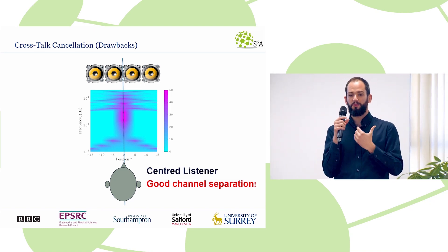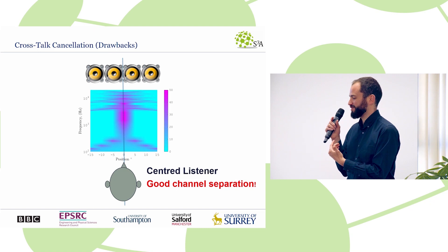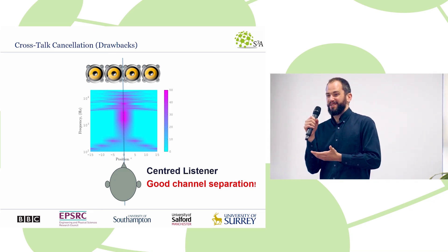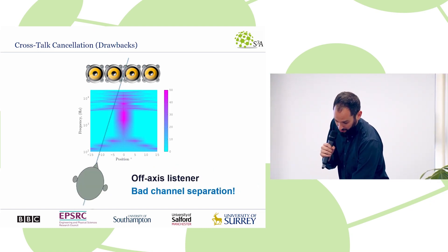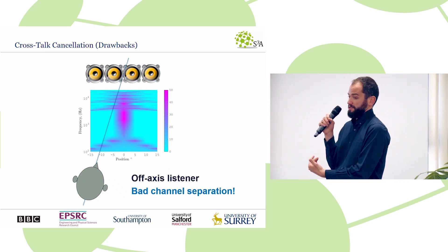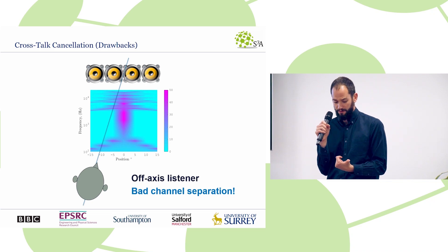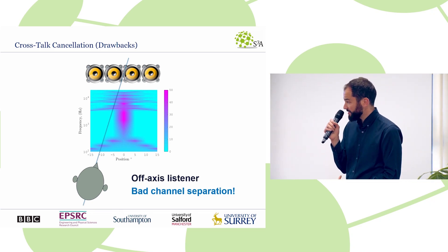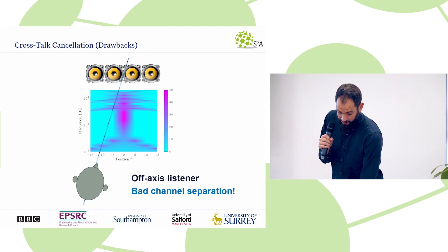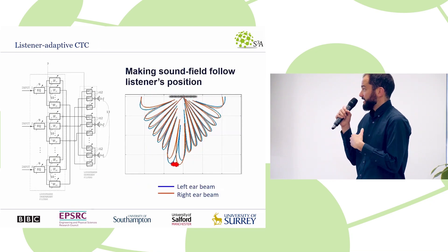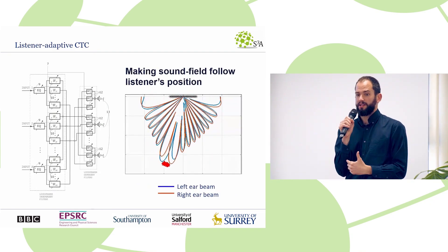In a practical living room situation, we don't always sit in the same position on our sofa. When you move from the sweet spot, the channel separation is not good and you won't get a 3D image. This is what we worked on in S3A: developing techniques that allow listener-adaptive crosstalk cancellation.